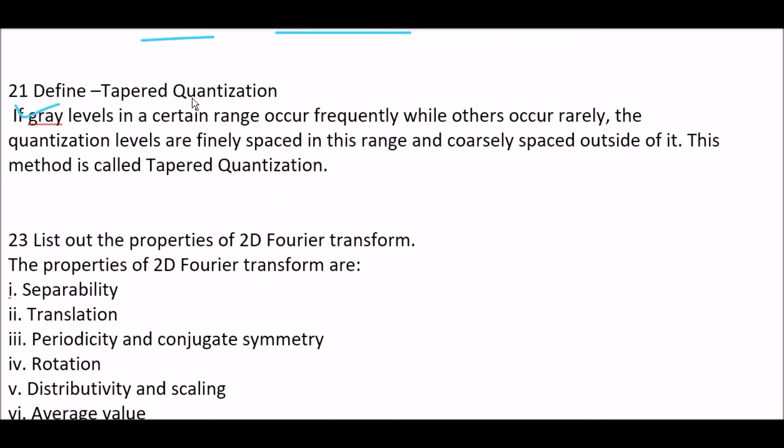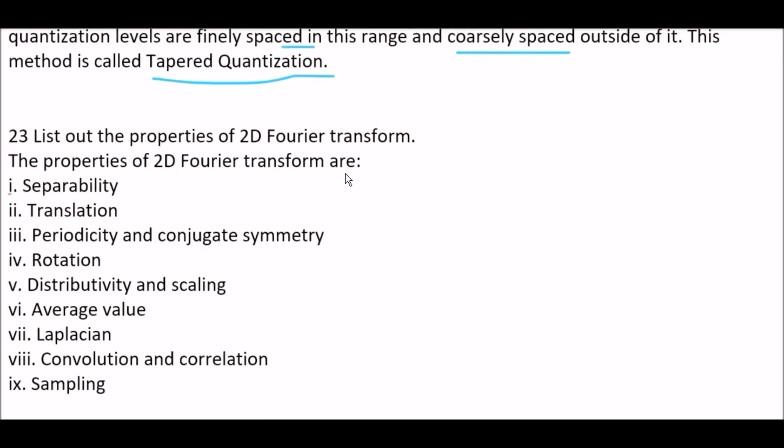Next question. Define tapered quantization. Answer is, if gray labels in a certain range occur frequently while others occur rarely, the quantization labels are finely spaced in this range and coarsely spaced outside of it. This method is called tapered quantization and it's very important. Most of the chances are, you may get one to two numerical topics, so please, you have to cover it right now.